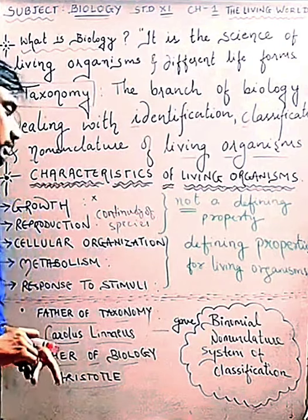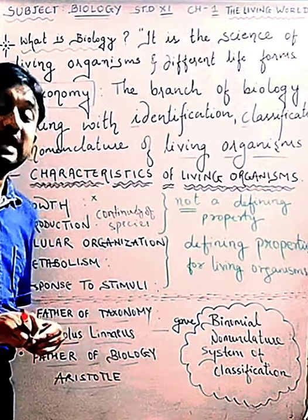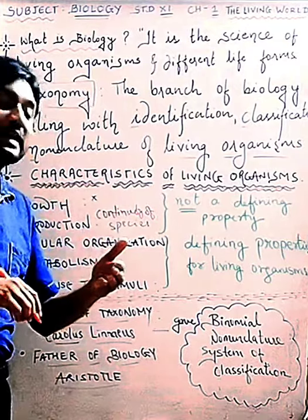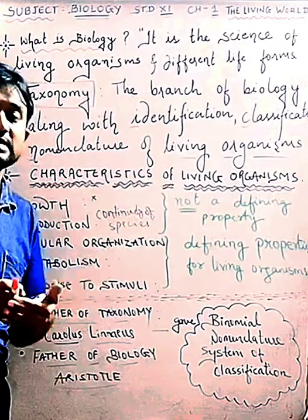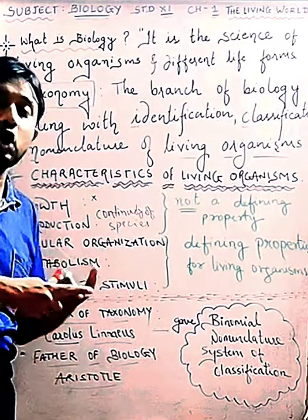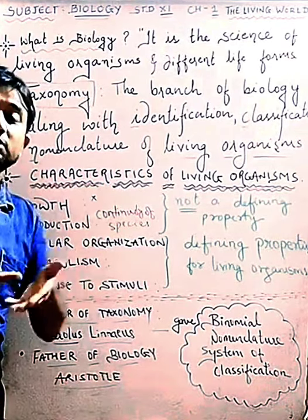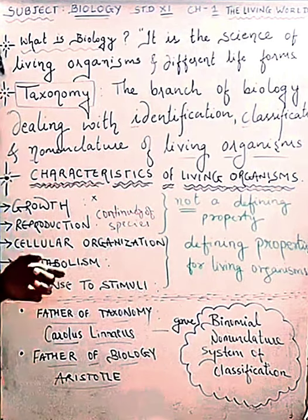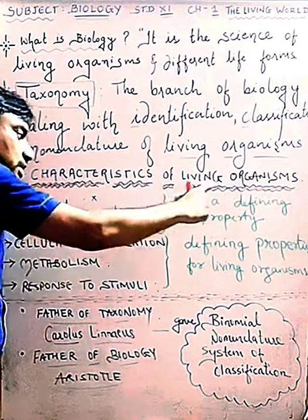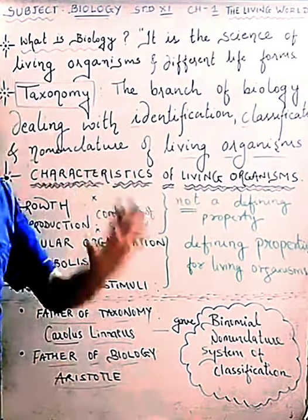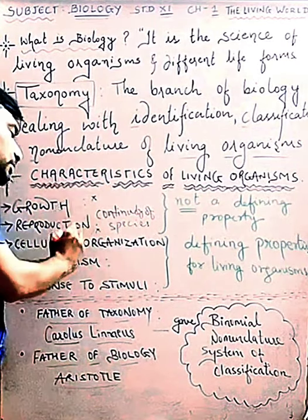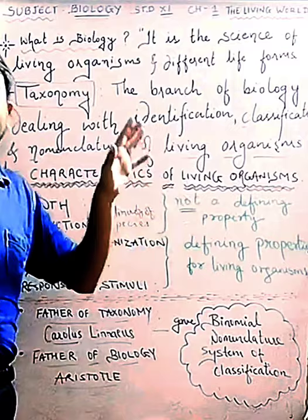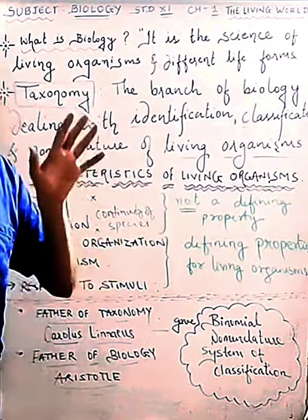Reproduction cannot define a living organism because some living organisms cannot reproduce — for example, sterile organisms or hybrid animals like the mule, which is a hybrid of a horse and a donkey. Such organisms are still living. So growth and reproduction are characteristics of living organisms, but they alone cannot define a living organism — they are not defining properties.